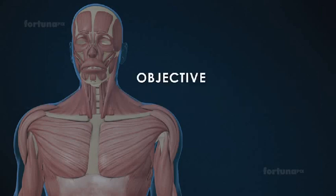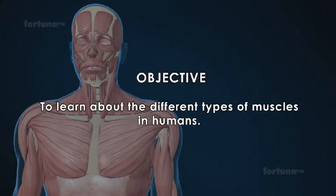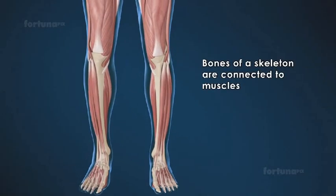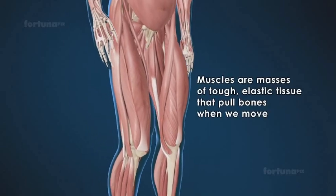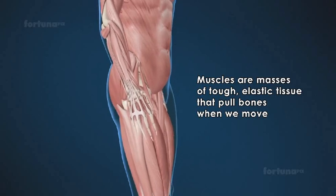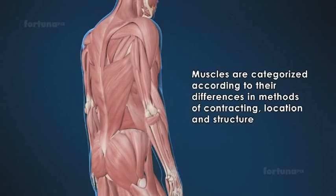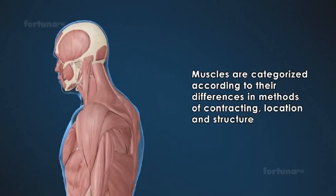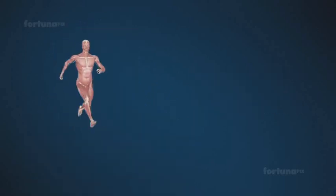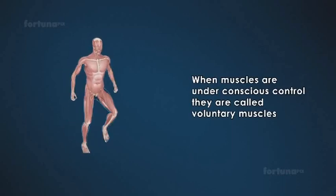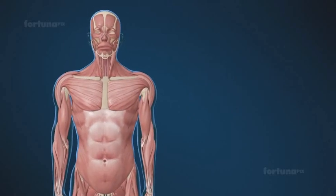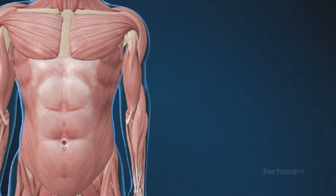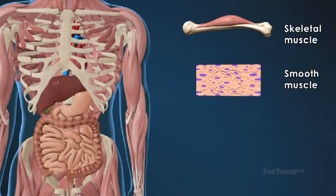Muscular tissue: the bones of a skeleton are connected to muscles. Muscles are masses of tough elastic tissue that pull bones when we move. Muscles function by contracting and are categorized according to their differences in methods of contracting, location, and structure. When muscles are under conscious control they are called voluntary muscles; involuntary muscles are not under conscious control. There are three types of muscles: skeletal, smooth, and cardiac.